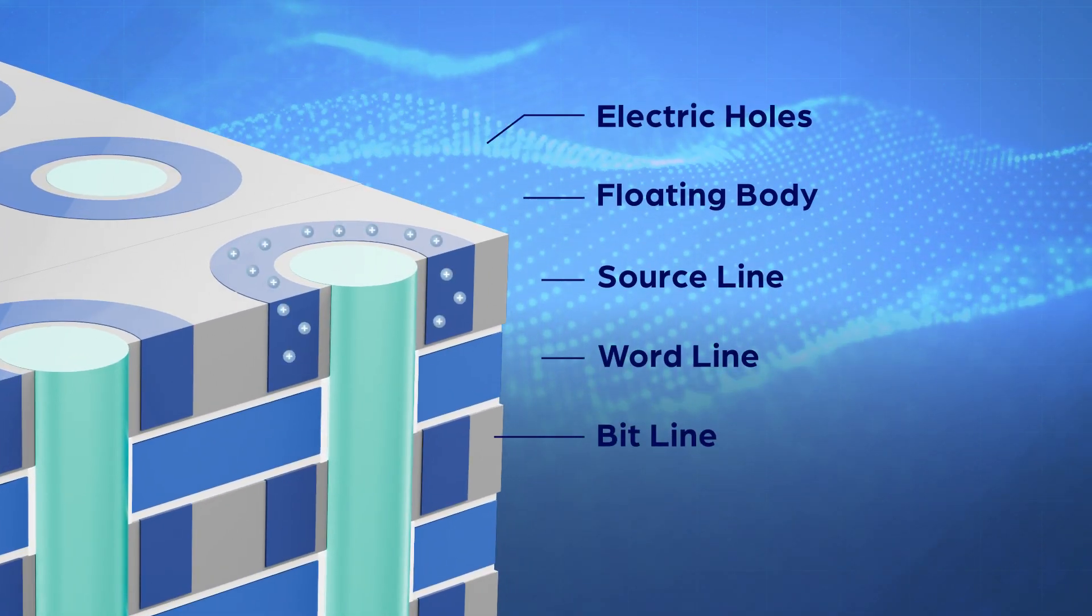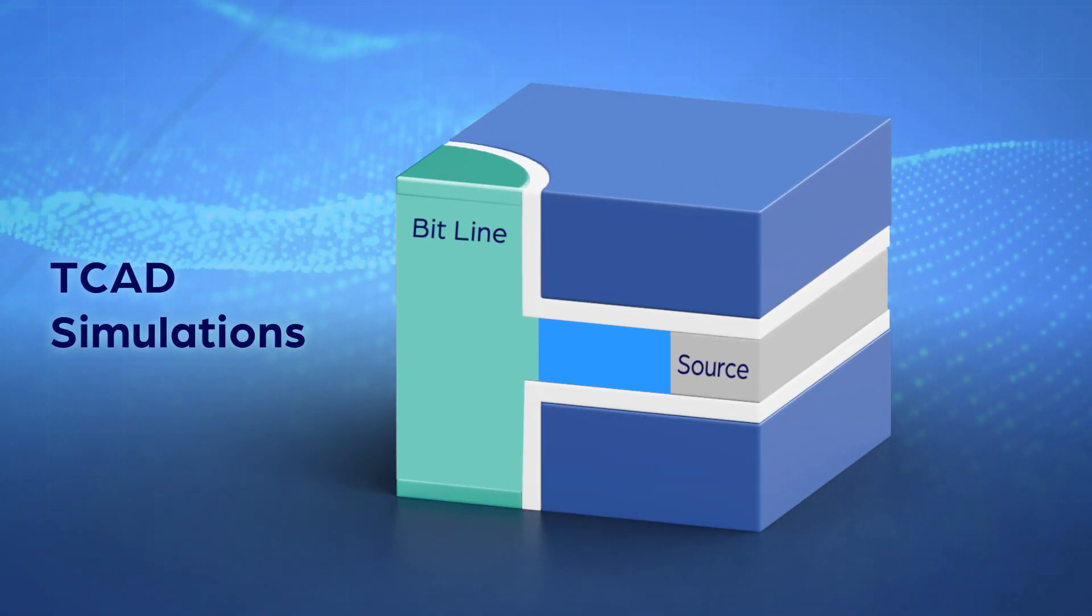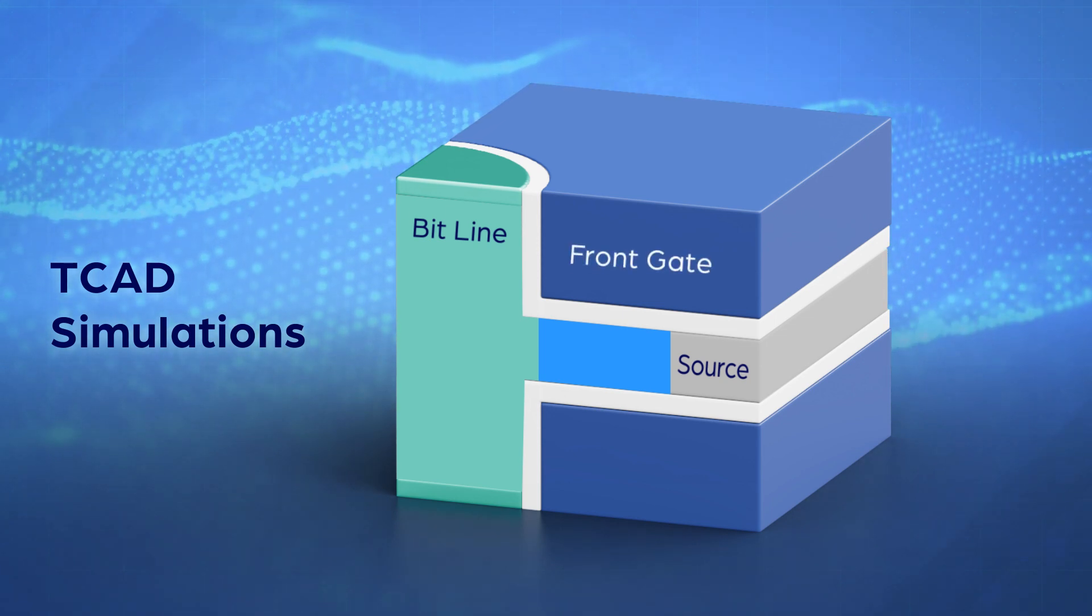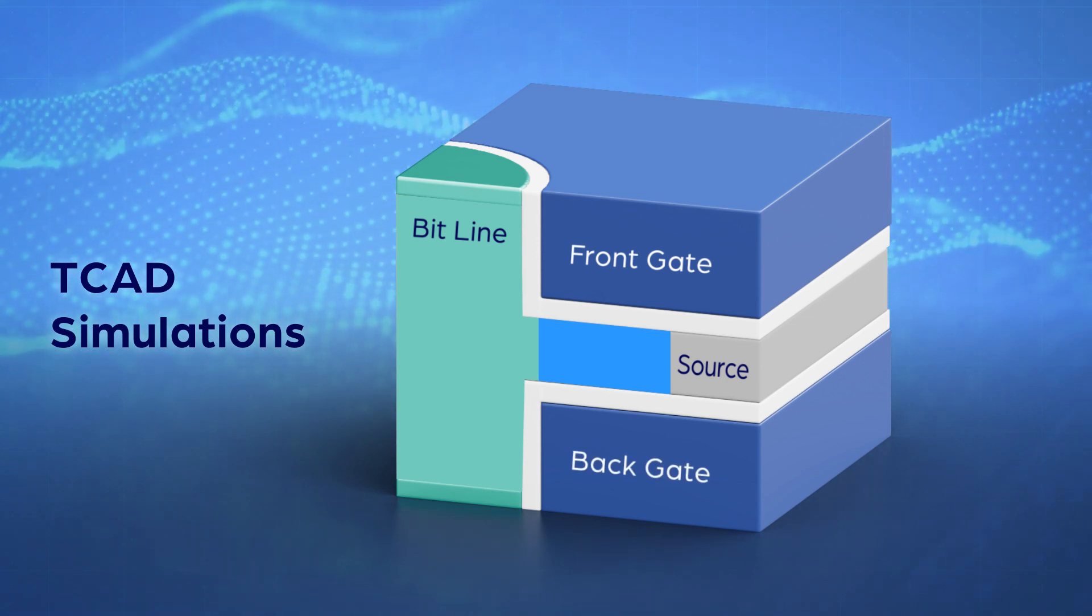The floating body stores electric holes to represent data. The 3D XDRAM cell has a unique dual-gate structure. The front gate performs normal read and write operations, while the back gate can be applied with a voltage to enhance data storage.